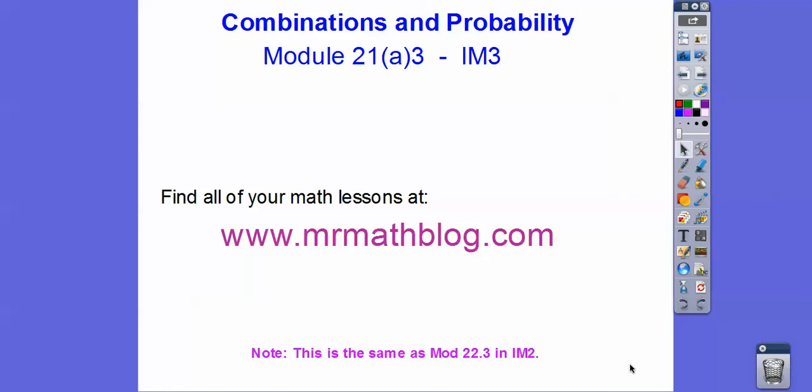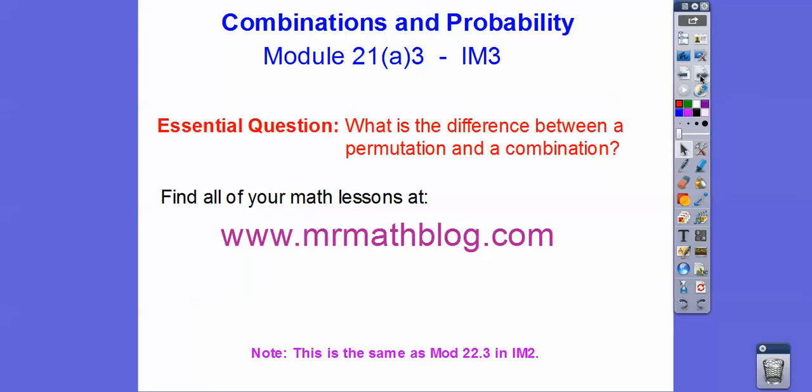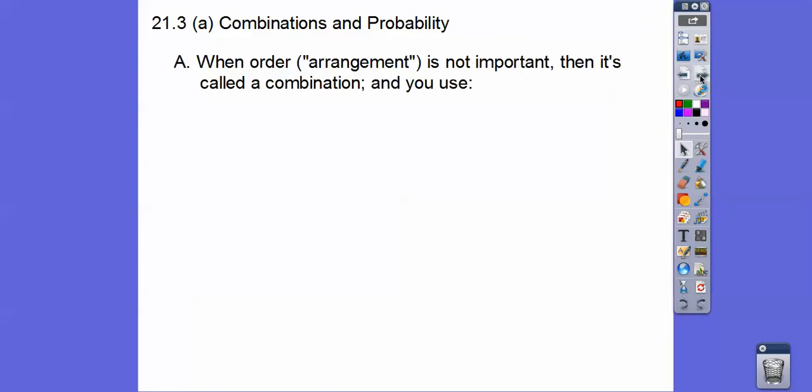Hey folks, combinations and probability. The last one we did was permutations in probability. This is module 21.3 in IM3, so it's the same lesson as 22.3 in IM2 if your classes did that. I know my school didn't where I taught last year. So what's the difference between permutations and combinations?